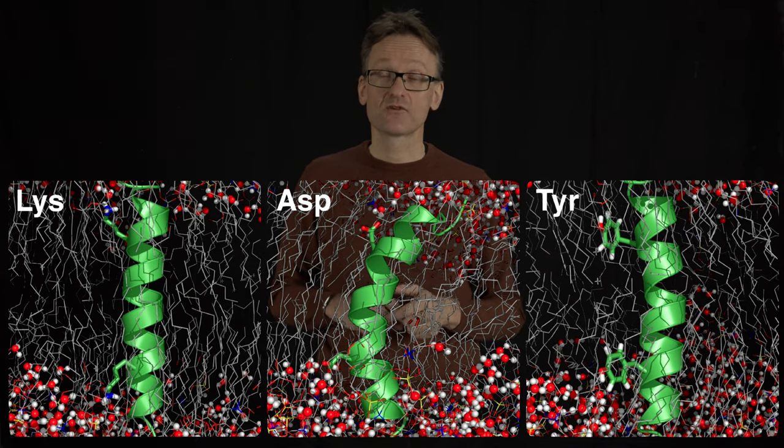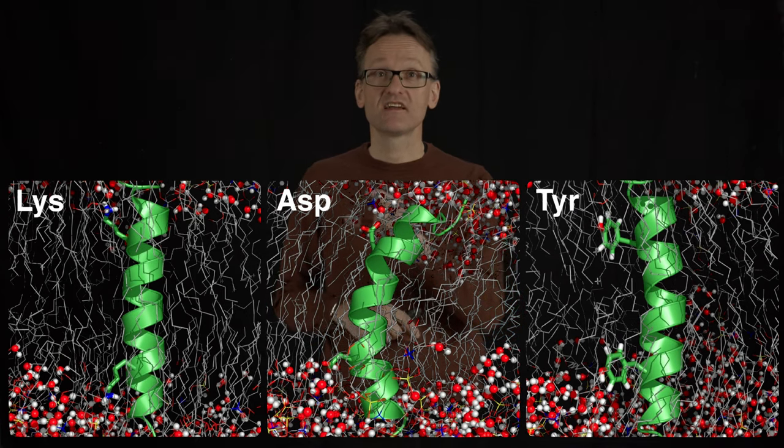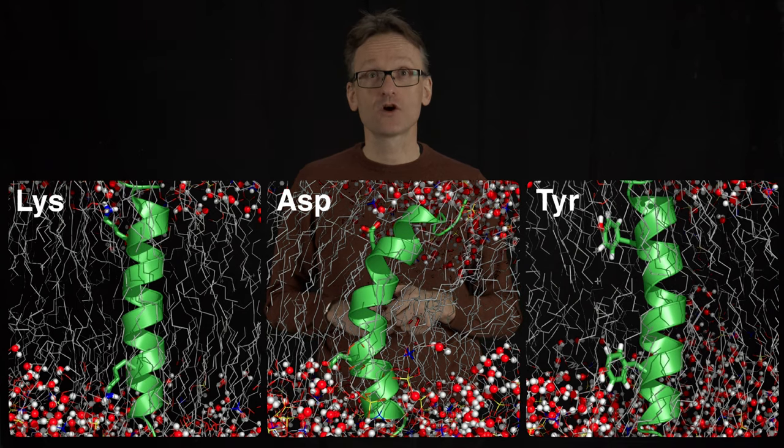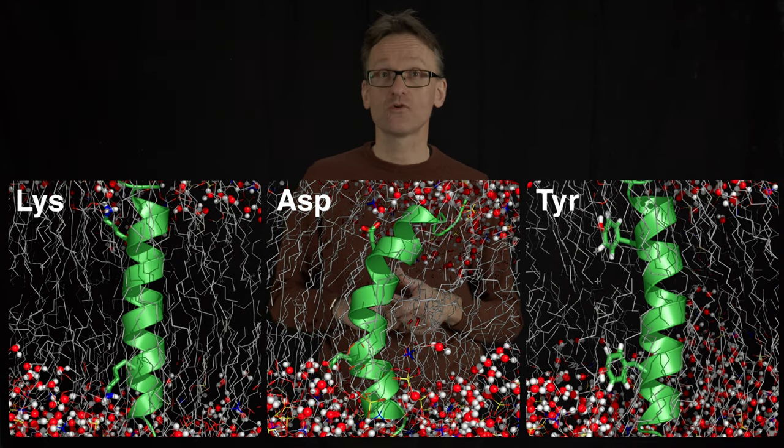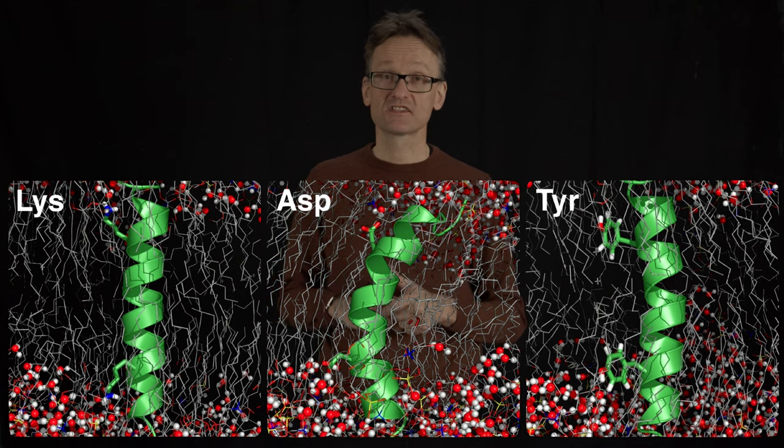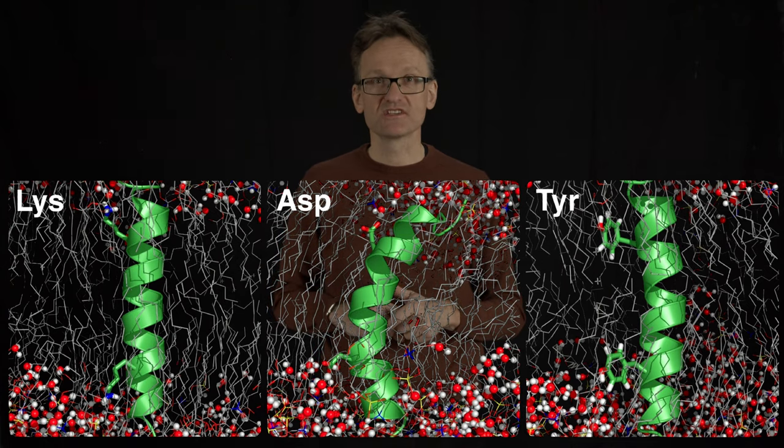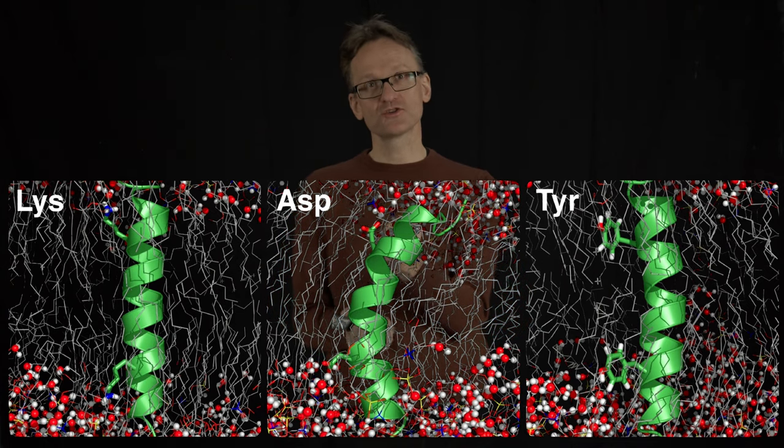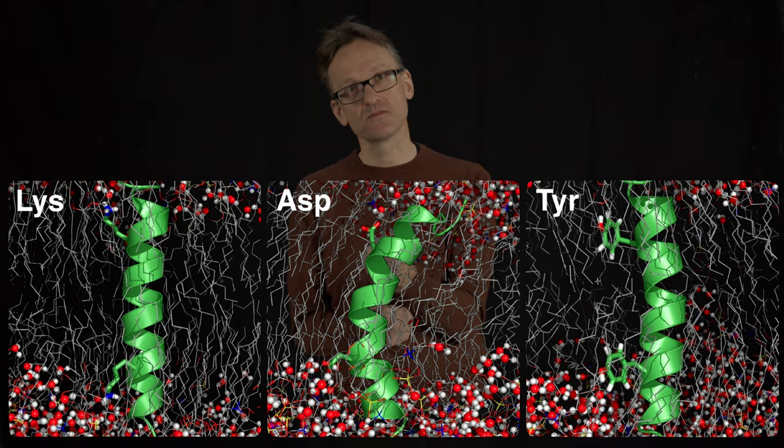This helix or these side chains here, they cannot interact with the carbonyl groups. They have to stretch all the way out to the water or the phosphates. Do you see what the difference is? This is a far larger distortion of the entire helix and the membrane around it.